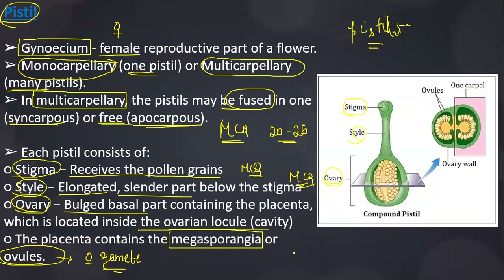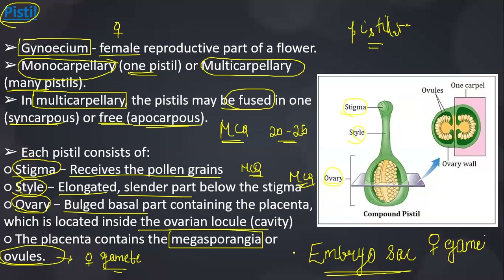Which is the female gametophyte? The female gametophyte is the embryo sac. Embryo sac is the female gametophyte.